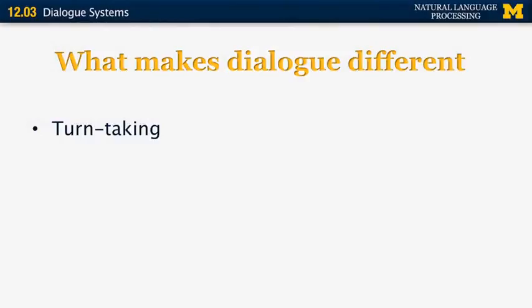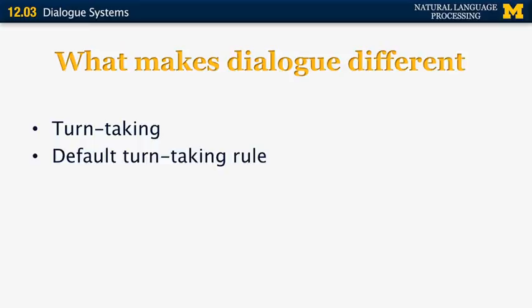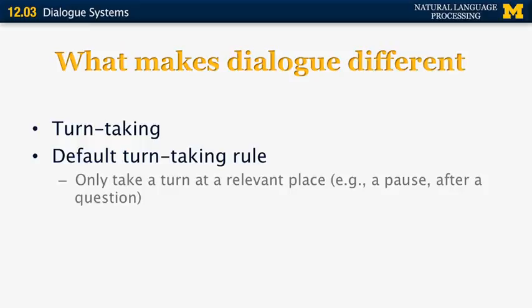This idea is called turn-taking — two or more people take turns. There are specific rules for turn-taking. For example, people are not expected to interrupt others unless there's a good reason or unless a lot of time has elapsed. The default turn-taking rule says more or less that you say what you want to say, then give a chance to the other participant to respond, and so on. This is the default, and there are many exceptions to it.